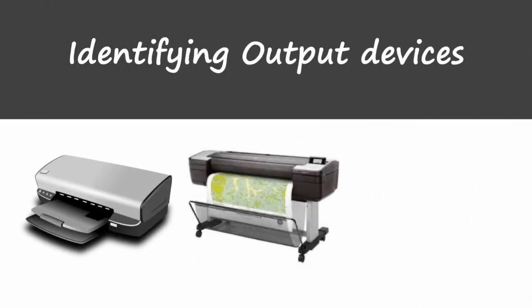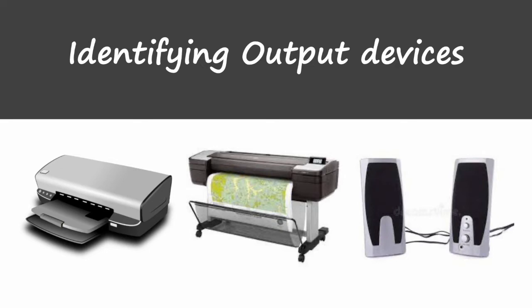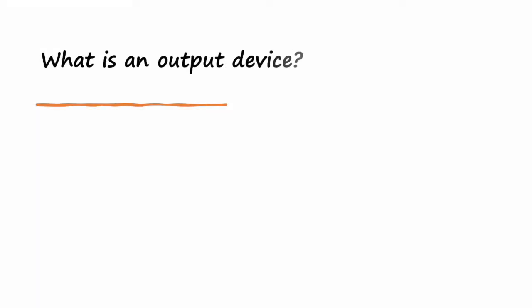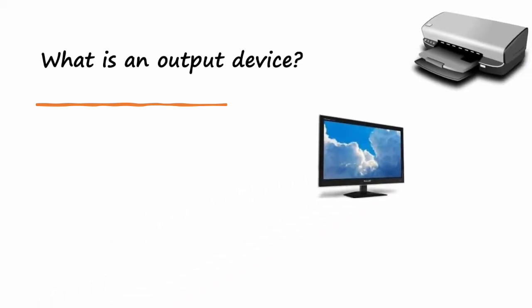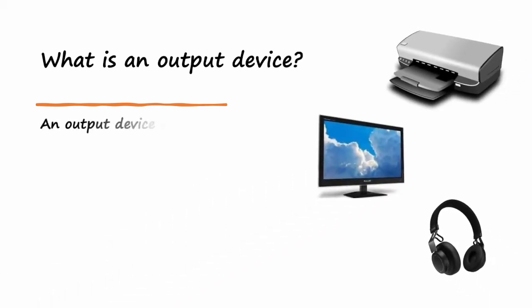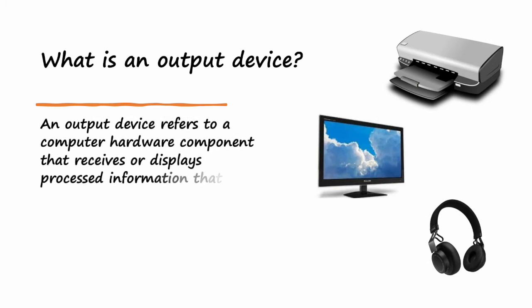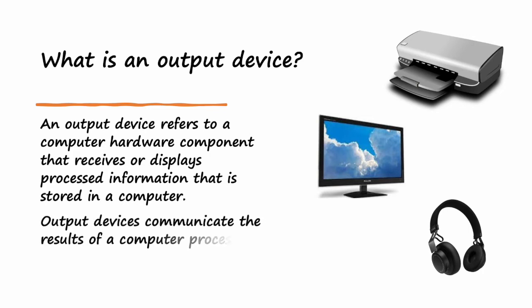In this lesson, we will identify various output devices. An output device refers to a computer hardware component that receives or displays processed information that is stored in a computer. Output devices communicate the results of a computer processing activity.